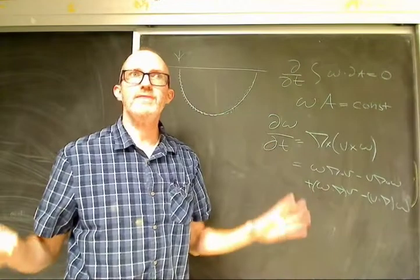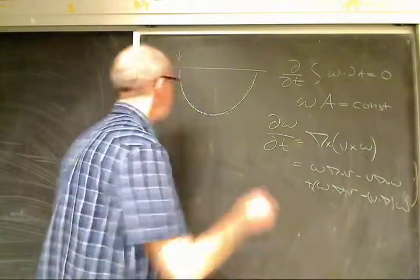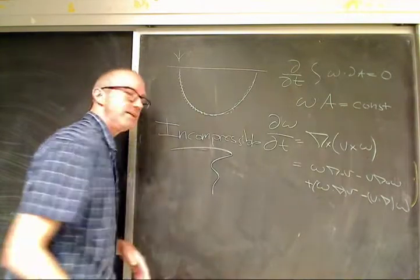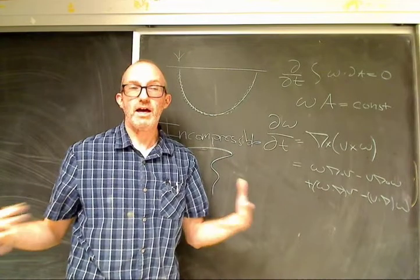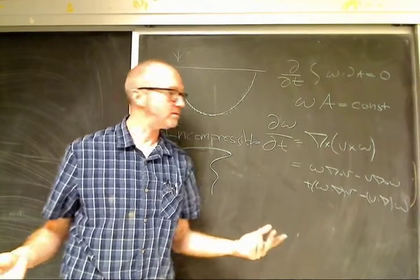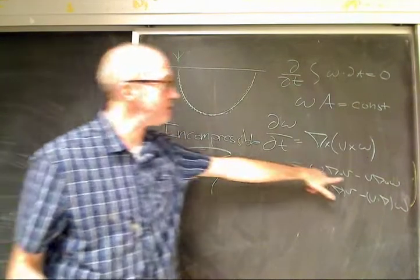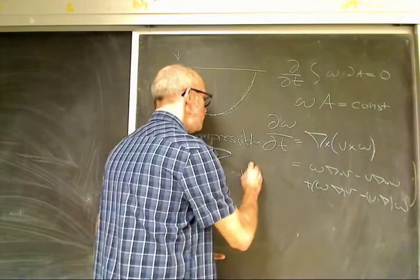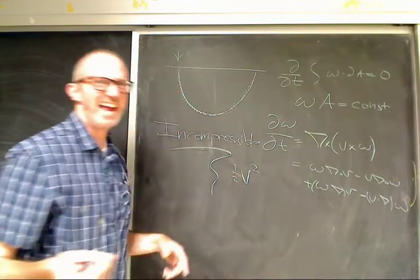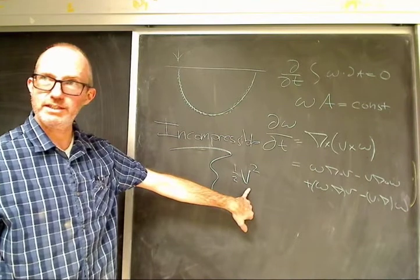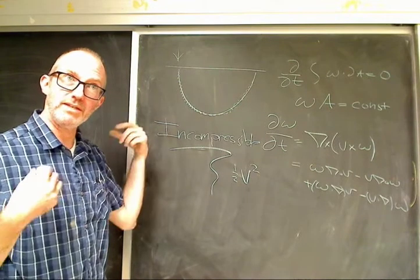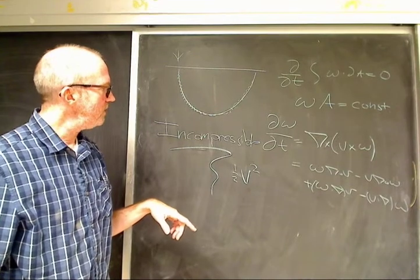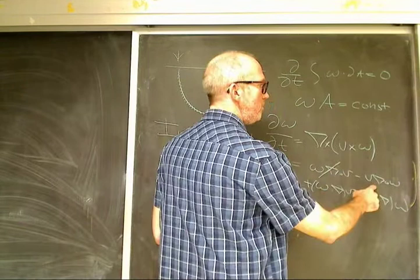There's another term that I'm throwing away. If I rewrite this, I can write it as omega times div v minus v div omega plus omega dot grad v minus v dot grad omega. There's a vector identity that turns this into this. Now, everything going forward until we're done with turbulence — everything is incompressible.